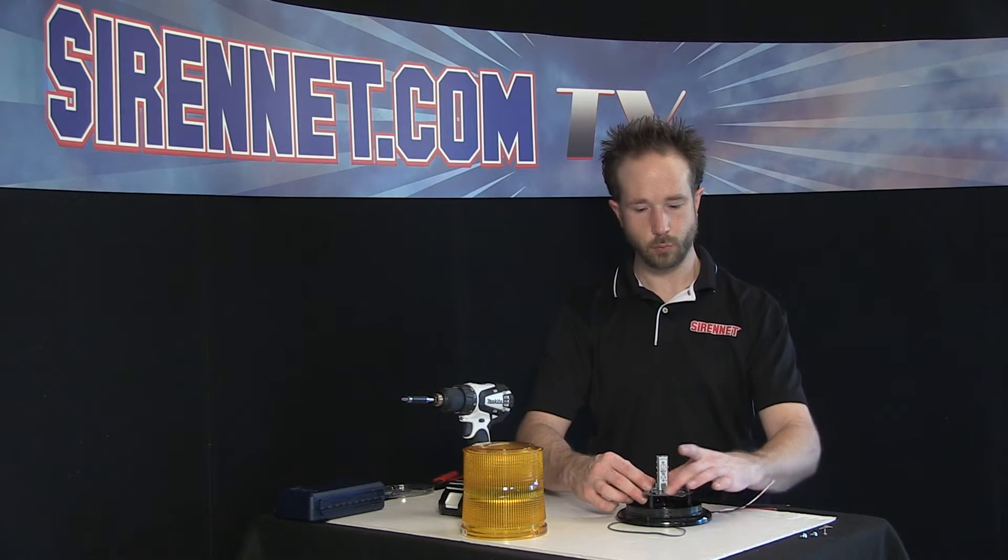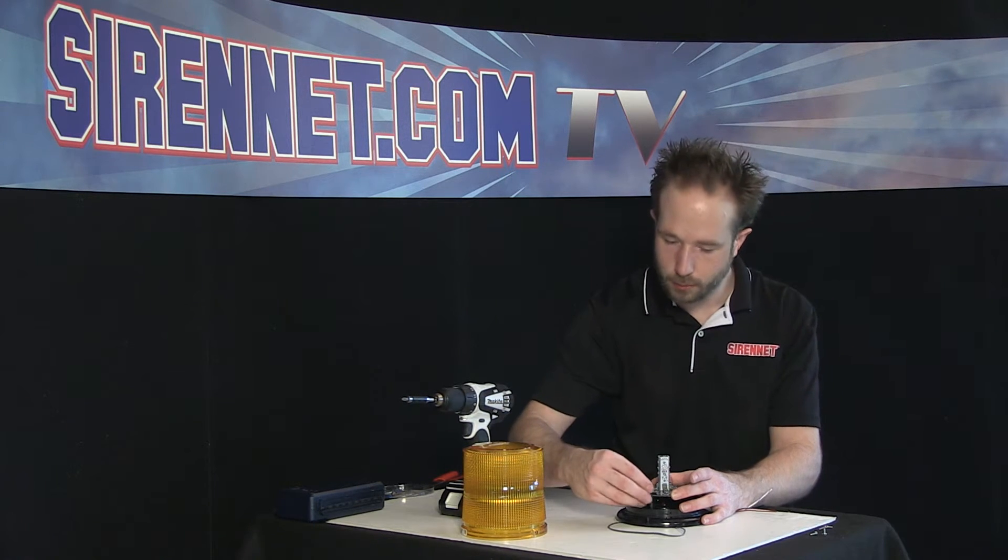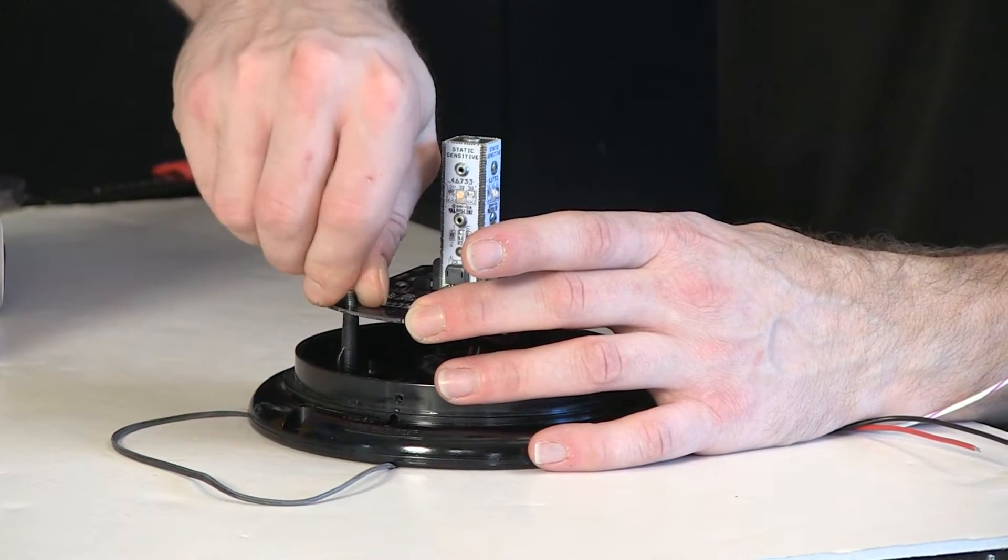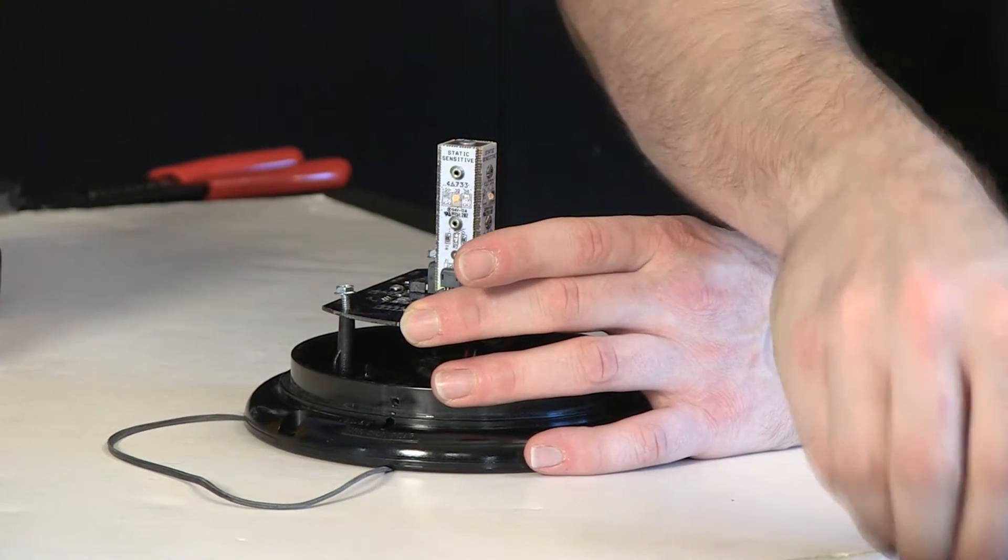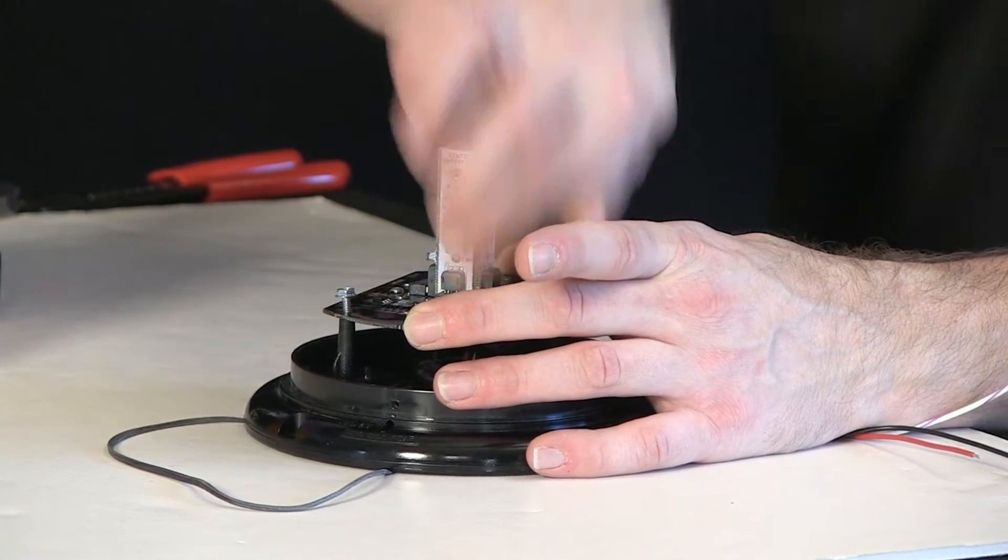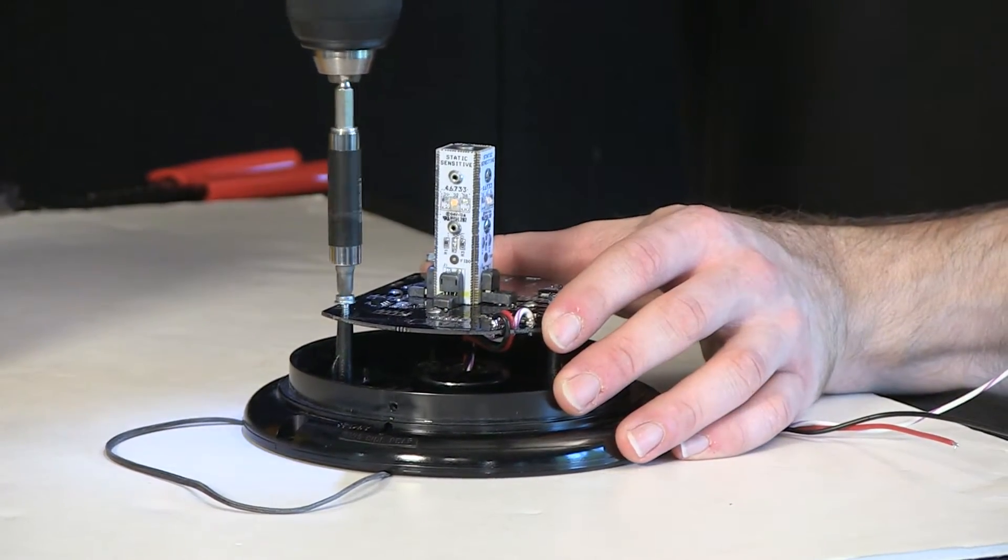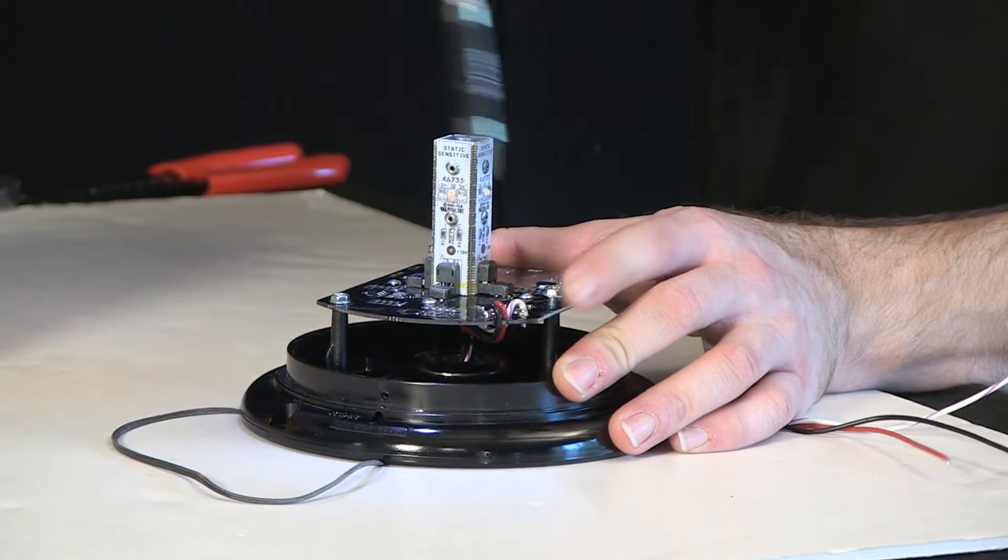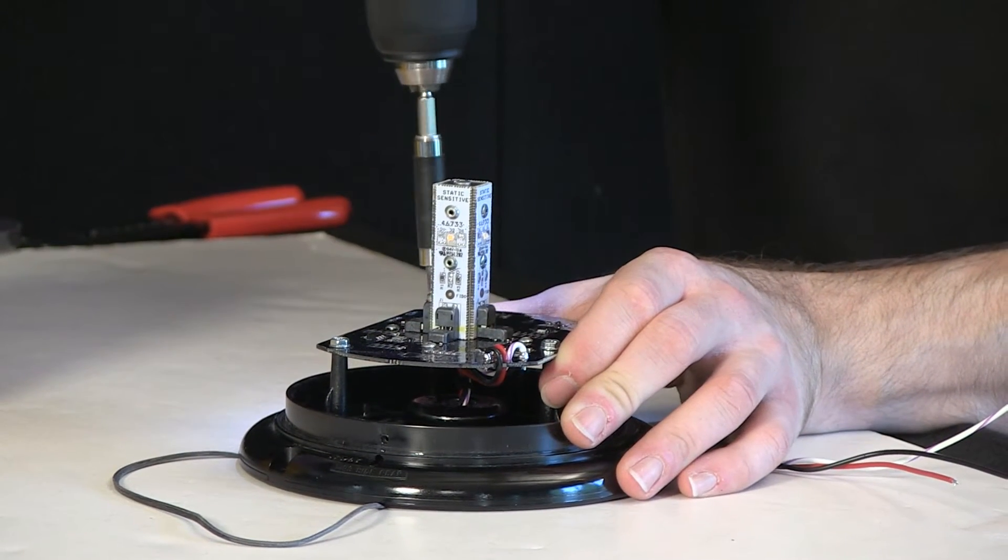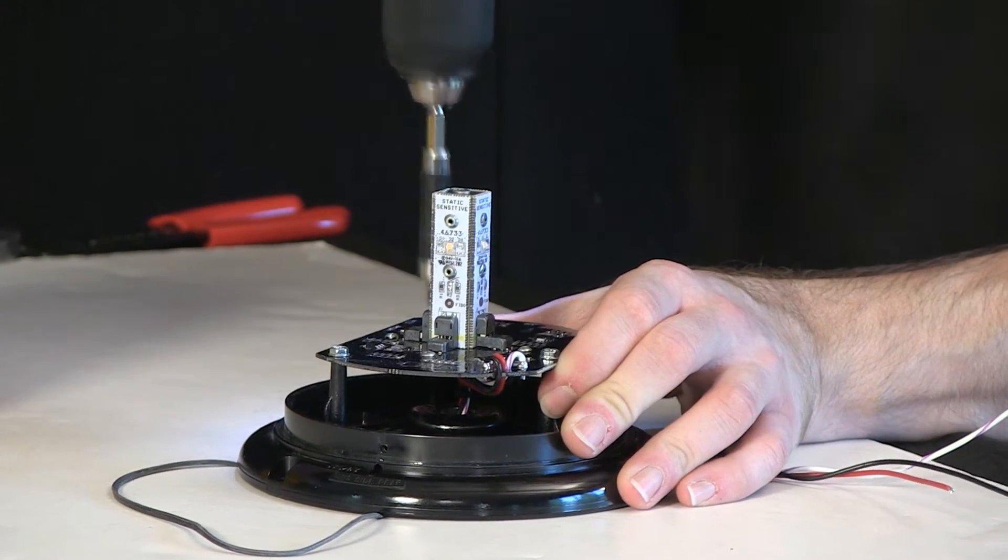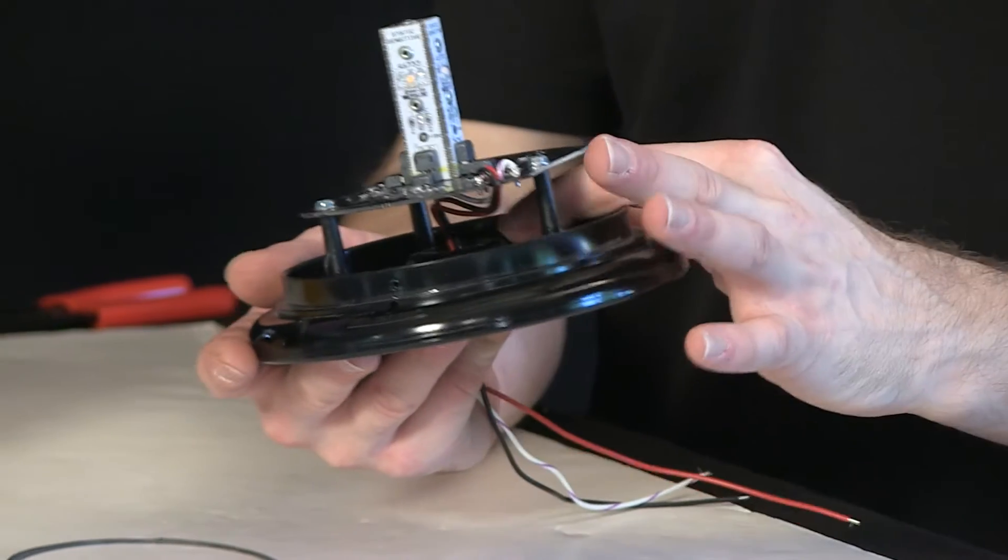So I will now realign the tower assembly with the mounting posts. This realigns the three screw holes in the electronic assembly to the posts here. Go ahead and tighten the screws in to get it started. There we have it. So that's been tightened back down. You can see the spacing here for the harness.